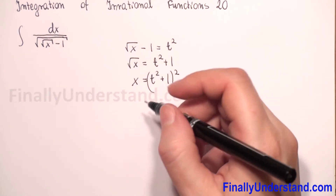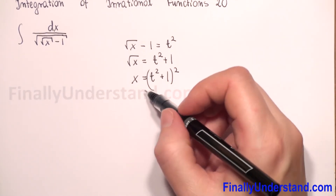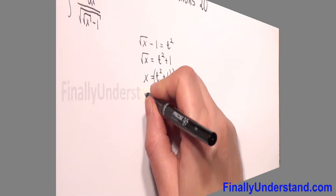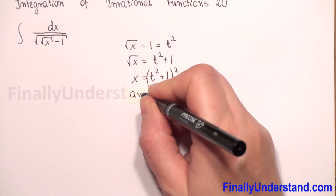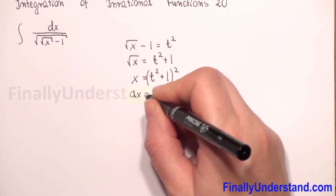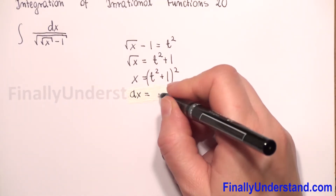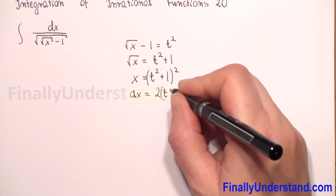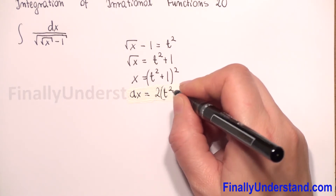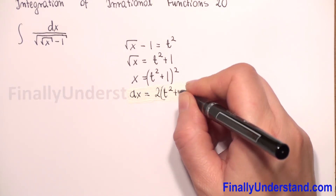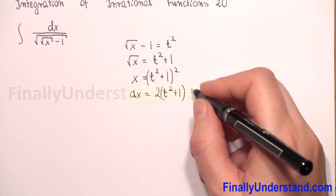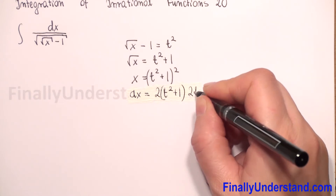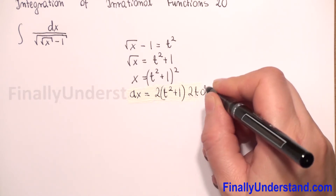Now we have to find the derivative of both sides. dx is equal to, in parenthesis we have t squared plus 1, times 2t dt.